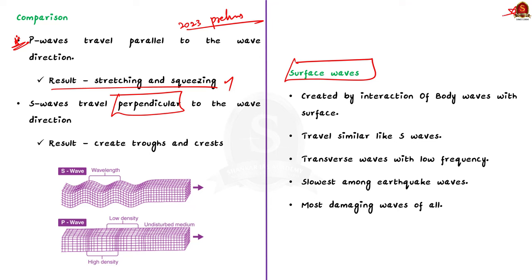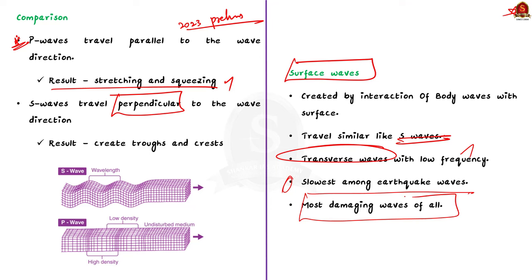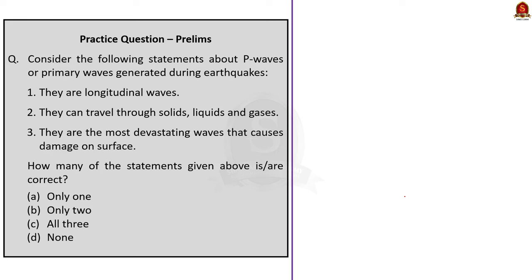Surface waves are generated when body waves interact with surface rocks. They move along the surface similar to S waves — they are also transverse waves but have low frequency. Surface waves are the slowest among earthquake waves and are recorded last on the seismograph, but they are the most damaging waves. Coming back to the question: statements one and two are correct — P waves are longitudinal and can travel through solid, liquid and gaseous materials — but statement three is incorrect as surface waves, not P waves, are the most devastating. So the correct option is B.